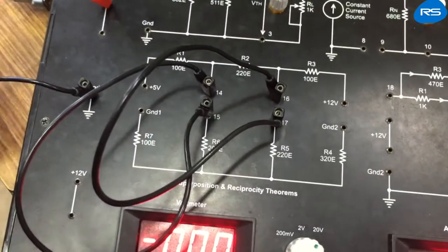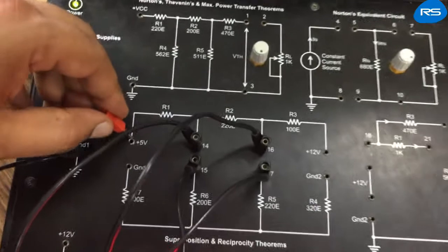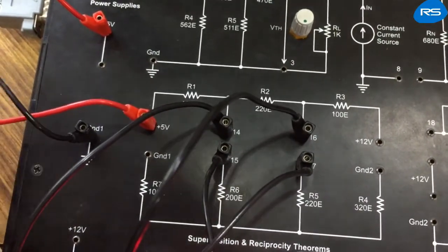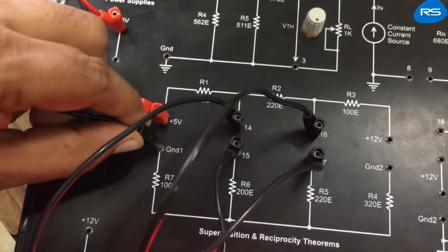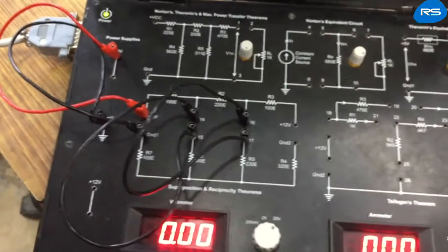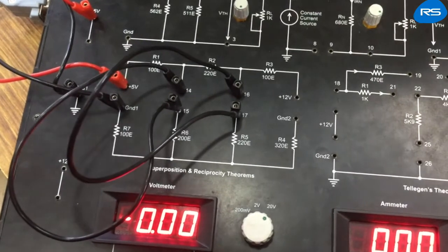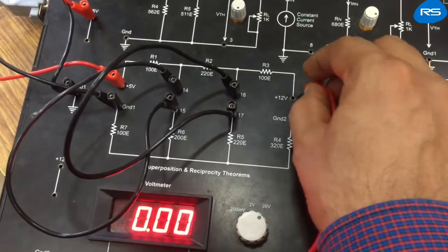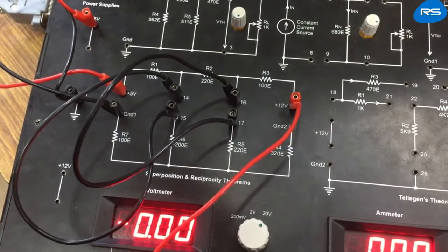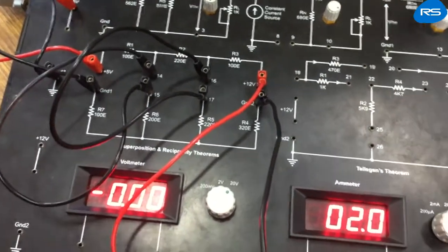Now we will connect plus 5 volt power supply positive terminal with plus 5 volt terminal of given circuit, and ground terminal of the power supply is connected with ground one point of given circuit. Now we will measure the current flowing through resistor R4. For this, we will connect the positive terminal of ammeter with plus 12 volt terminal and negative terminal of ammeter is connected with the ground two terminal of the network. So in this case we are getting 2.1 or 2 milliampere of current.